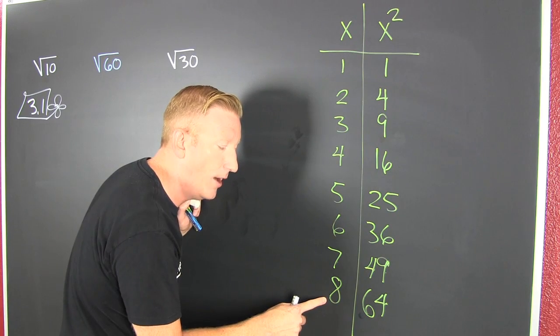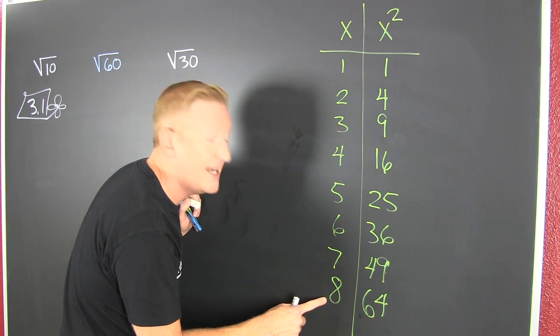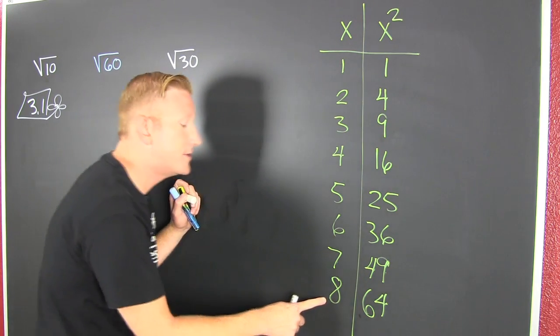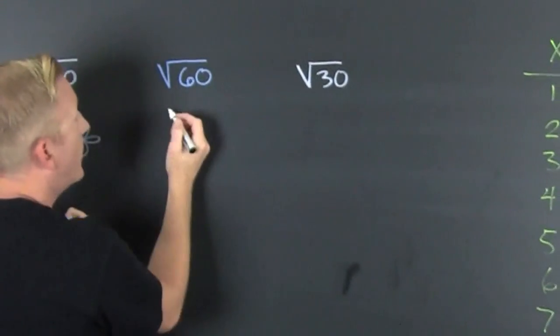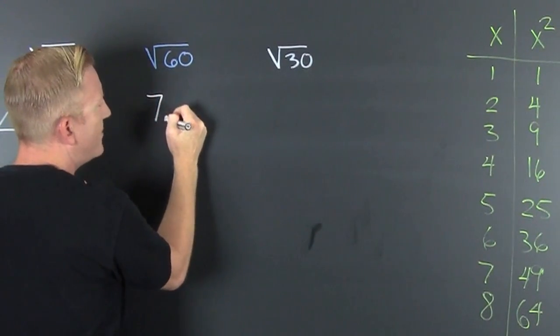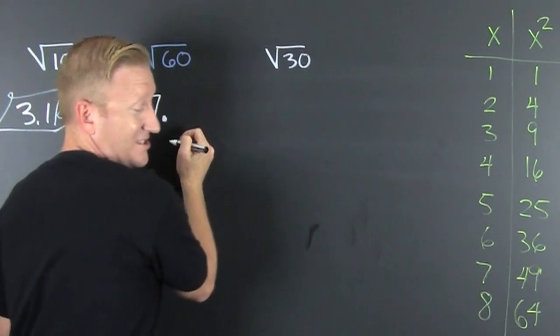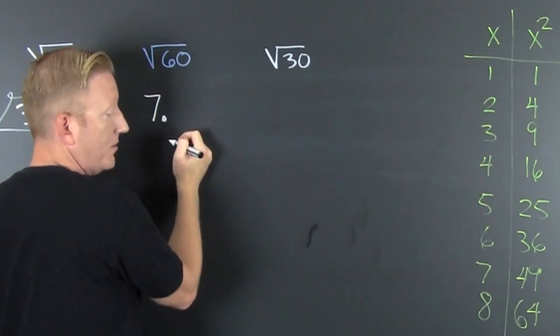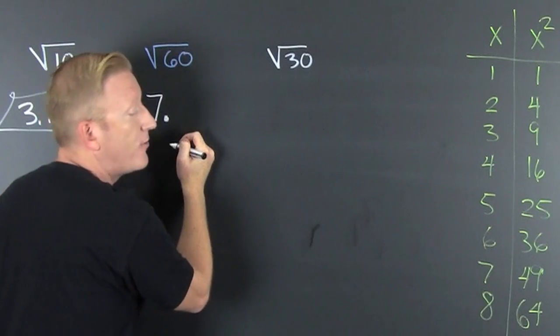But is it bigger than or smaller than 8? It's smaller than 8. So great. The square root of 60 is gonna be a little bit smaller than 8. Maybe 7.85 or 7.9. How much closer?